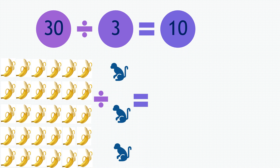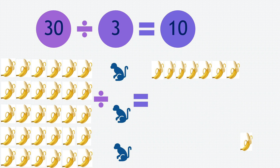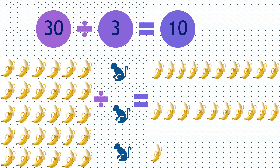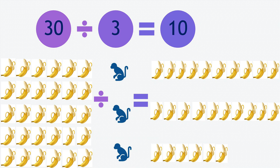Each monkey will receive 10 bananas: 1, 2, 3, 4, 5, 6, 7, 8, 9, 10. The next monkey: 1, 2, 3, 4, 5, 6, 7, 8, 9, 10. And last monkey: 1, 2, 3, 4, 5, 6, 7, 8, 9, 10.